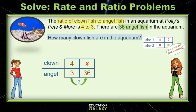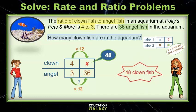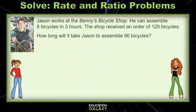Just think, 3 times what is 36? Uh, 12 Reba? That's right, and so we do 4 times 12 is 48. There are 48 clownfish in the aquarium. See guys, it's easy.